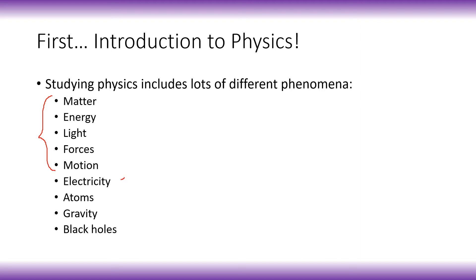Another thing that falls under the umbrella of physics is electricity, and related to electricity is magnetism. Electricity and magnetism are linked to one another — that came through doing different experiments and using a lot of math in a physics context. Lots of experiments and theoretical work, meaning math basically, is done by physicists to learn more about all of these different kinds of things.